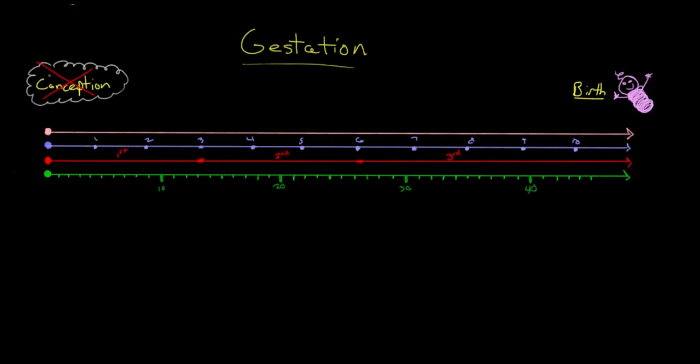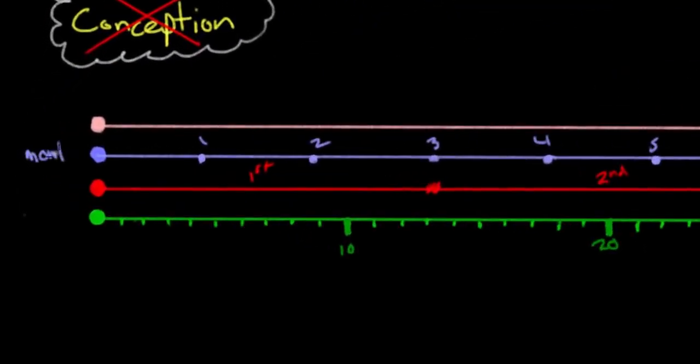So you can see basically how these are laid out. We have the same time frame here. The pink arrow measures the entirety of pregnancy. The blue timeline is for months, the red timeline is trimesters, and the green timeline is for weeks.